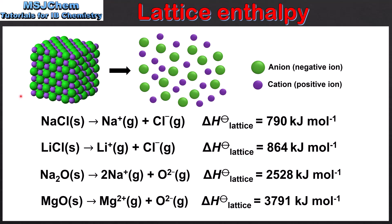Let's end the video with a summary. Lattice enthalpy can be thought of as the energy required to break up a solid ionic compound into its gaseous ions, as shown in the diagram. Lattice enthalpy can be represented in an equation where one mole of solid ionic compound is broken down into its gaseous ions, as shown in these four equations. The value of the lattice enthalpy depends on two factors: the charge on the ion and the ionic radius. The higher the charge on the ion and the smaller the ionic radius, the stronger the ionic bond and the higher the value of the lattice enthalpy.